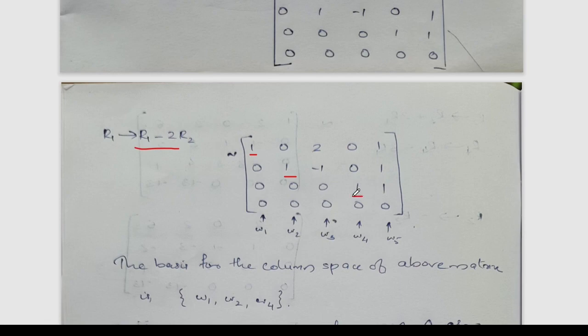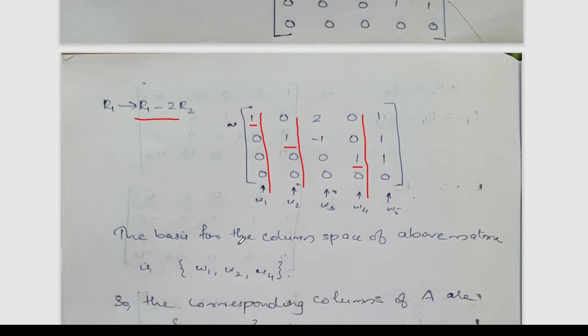There are 3 non-zero rows, with leading ones in columns 1, 2, and 4. The corresponding columns W1, W2, and W4 of the original matrix form a basis for the column space. Therefore, the basis for the column space of the given matrix is the set {W1, W2, W4}.